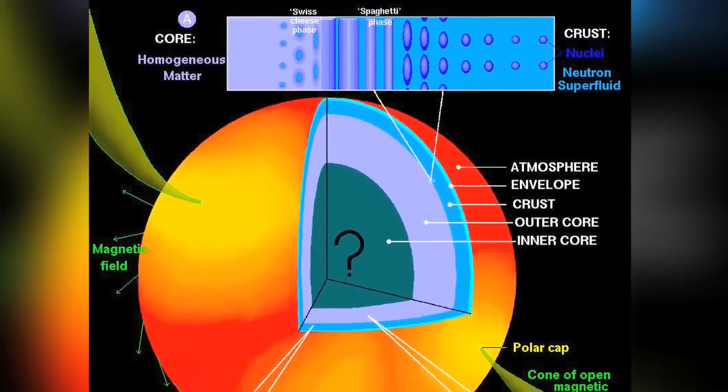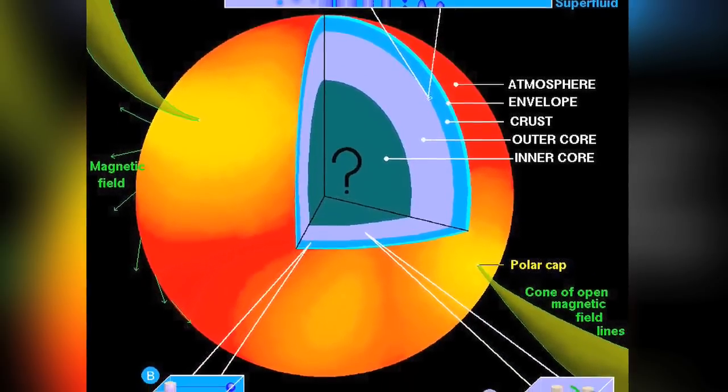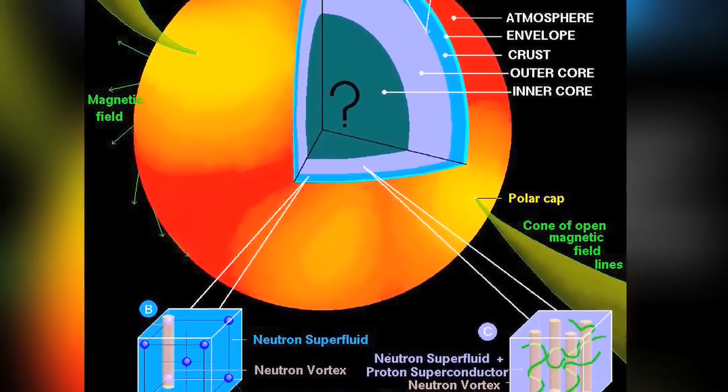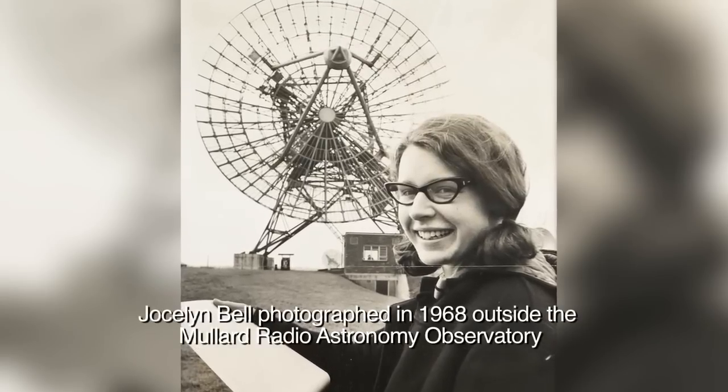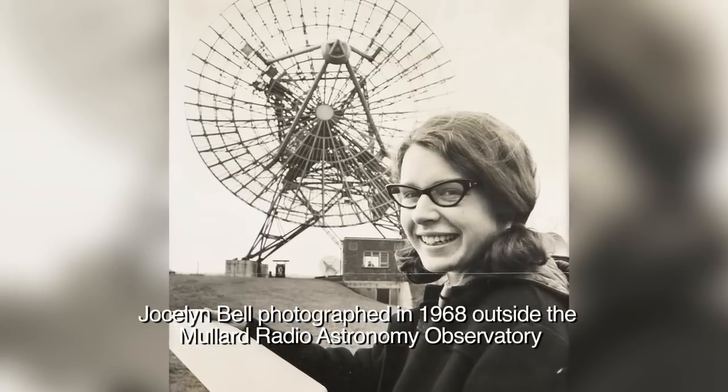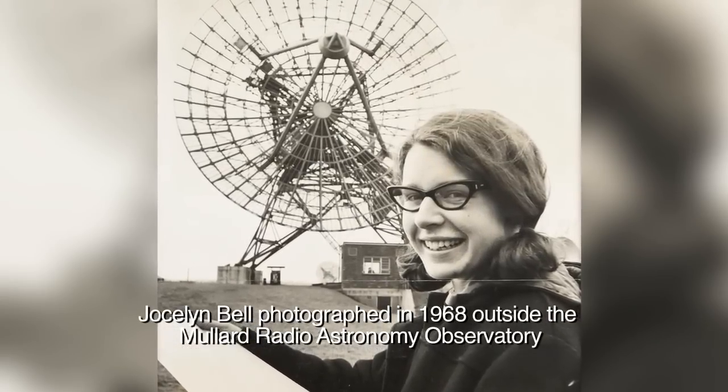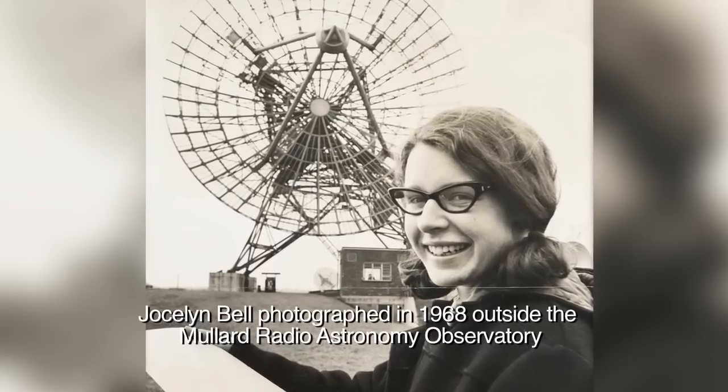But the hypothesis of the neutron star was not a predictive theory that was composed and then verified through observation. Rather, the hypothesis was invented in the 1960s, after the completely unexpected discovery of radio pulses from the constellation Vulpecula.